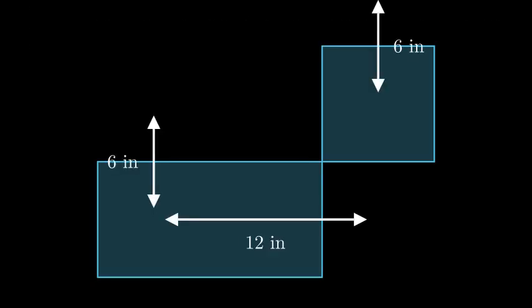First, let's draw our shape. We have an L-shaped figure made up of two rectangles. The bottom rectangle is 12 inches wide and 6 inches tall, while the upper portion is 6 inches wide and 6 inches tall.